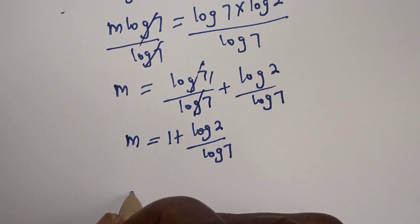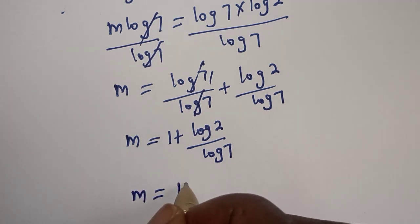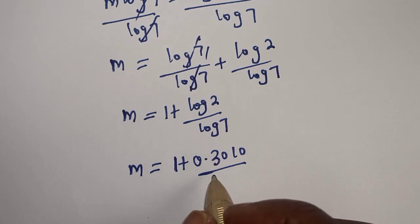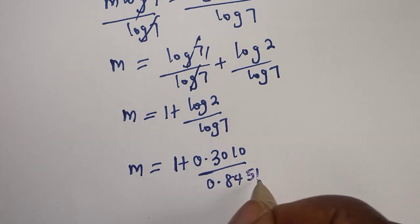Then, m is equal to 1 plus log 2 is 0.3010 over log 7 is 0.8451.